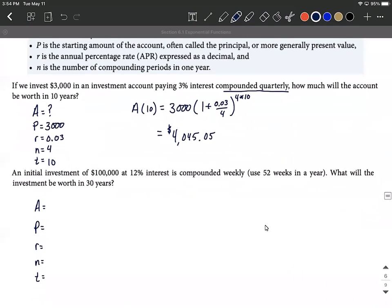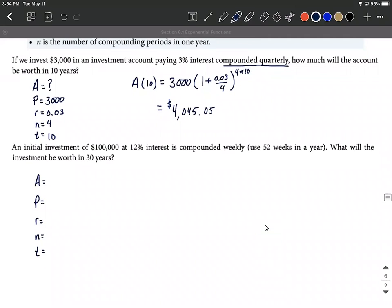Let's work one more very similar to this. We have an initial investment of $100,000 at 12% interest compounded weekly, 52 weeks in a year. We want to know what the investment will be worth in 30 years. We don't know A, but we know we invested $100,000 for P.